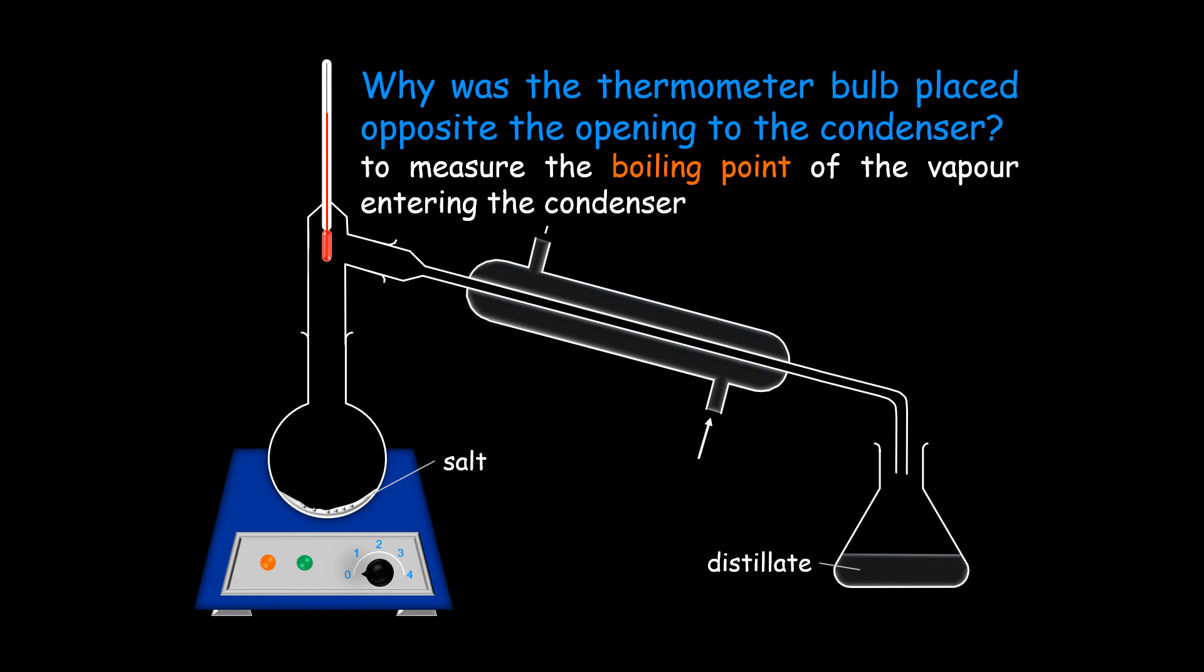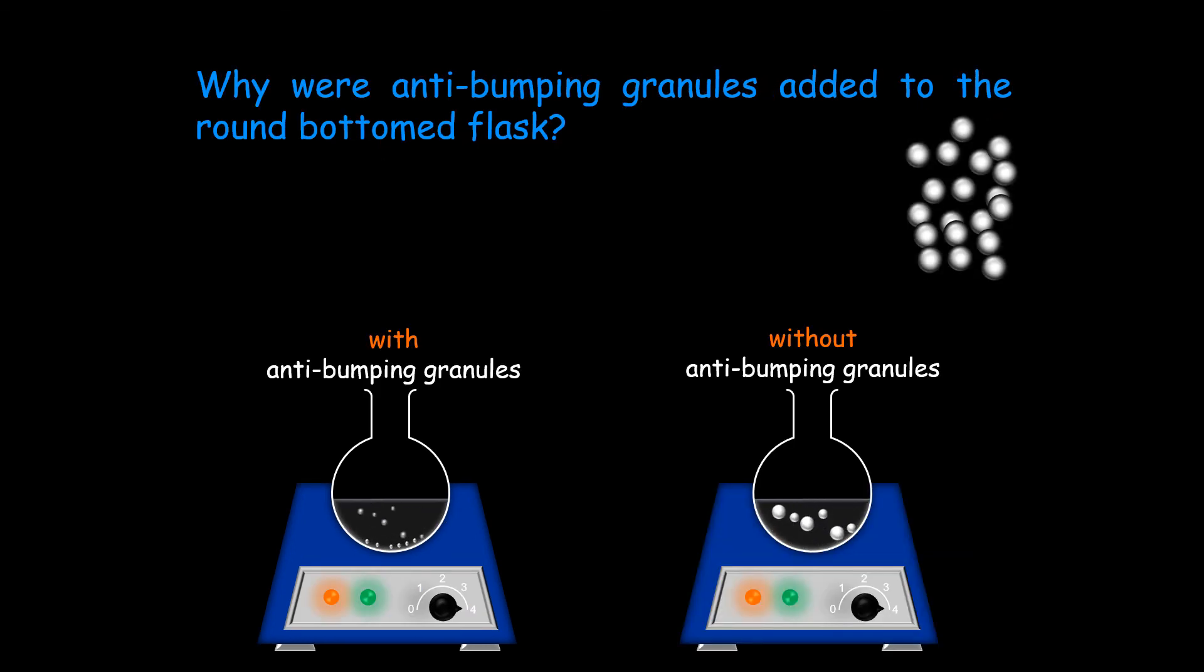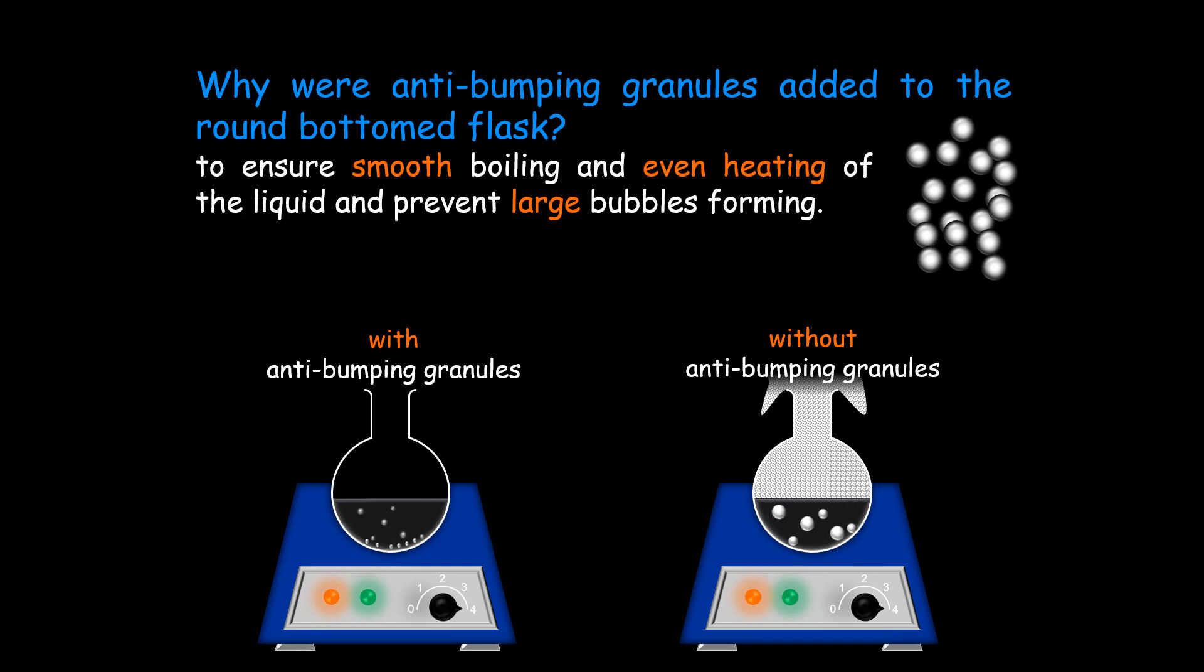The thermometer measures the boiling point of the vapor entering the condenser. Anti-bumping granules ensure smooth boiling and even heating of the liquid and prevent large bubbles forming.